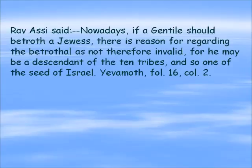I found it interesting that the daughters are considered to be the cornerstones. In light of this, there is a comment from the Talmud tractate Yevamot from Rav Asi: 'Nowadays, if a Gentile should betroth a Jewish woman, there is reason for regarding the betrothal as not therefore invalid.' This sort of thing is frowned upon — that Jews should marry Jews — but he is saying there is a reason that the betrothal would be okay, not invalid. They could get married.